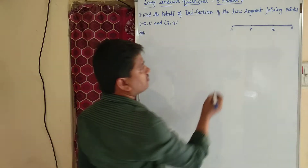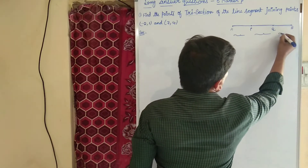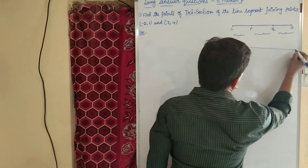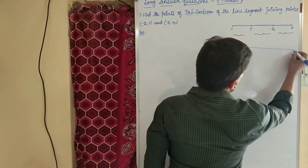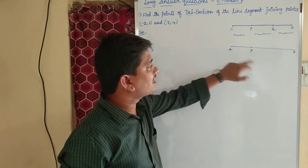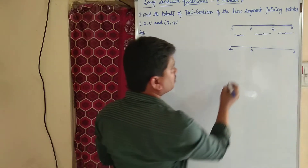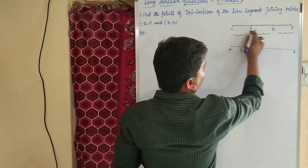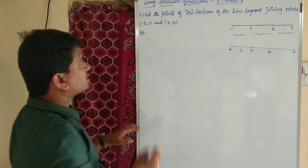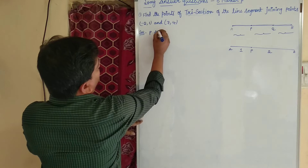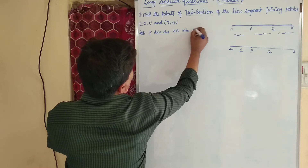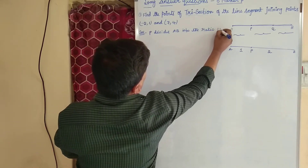This is one part, this is our second part, and this is the third part. So what does P divide AB into? AP is one part. What about PB? PB is two parts. So P divides AB into the ratio 1 is to 2.